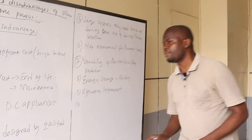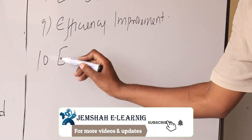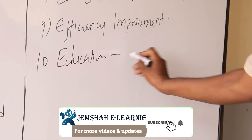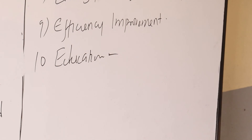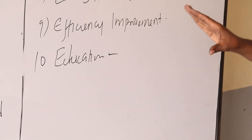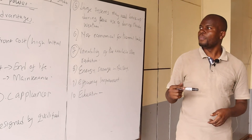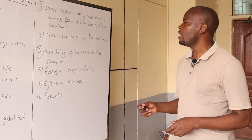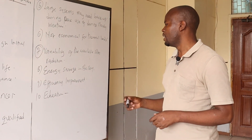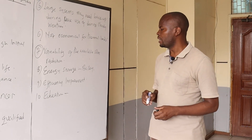Disadvantage number ten is education. Few people usually understand the value of solar energy and its feasibility. This lack of information slows the market for technological growth and prohibits several people from using solar electric power. Those are some of the disadvantages we have discussed today.